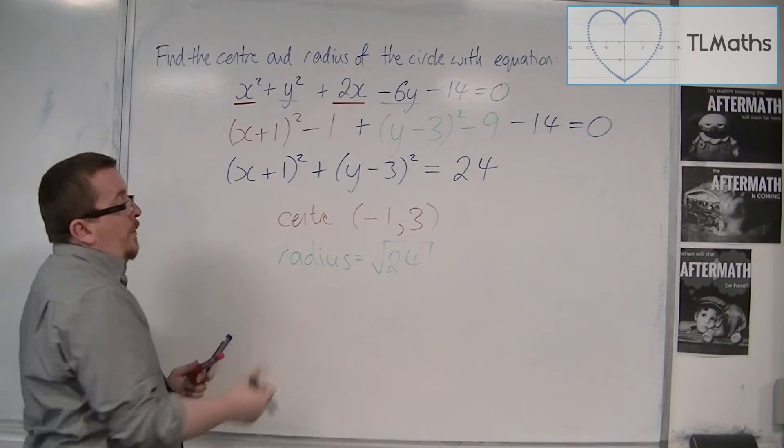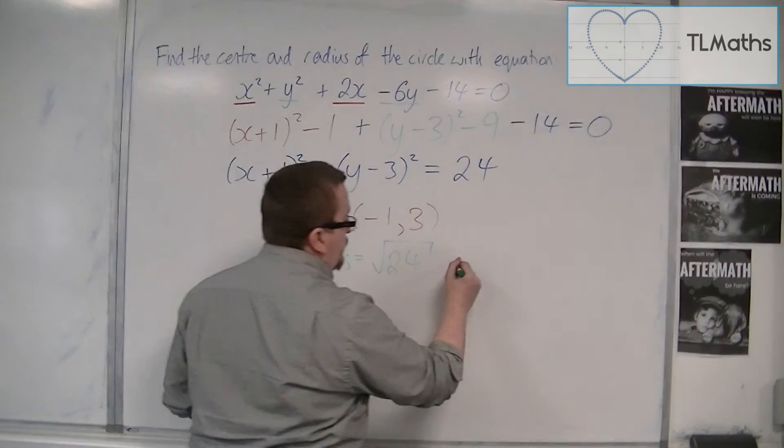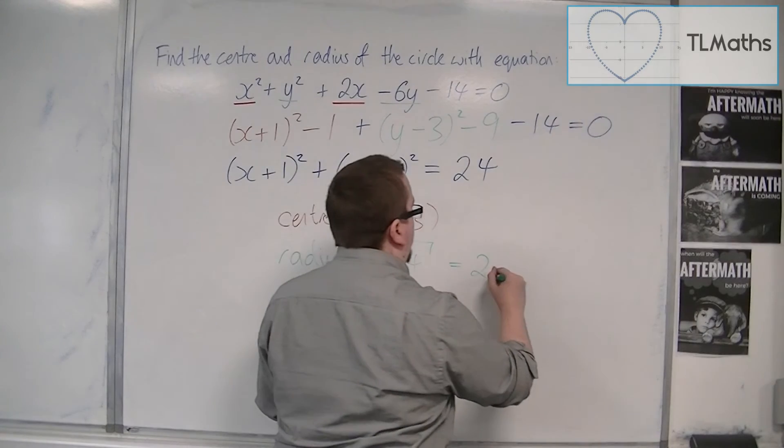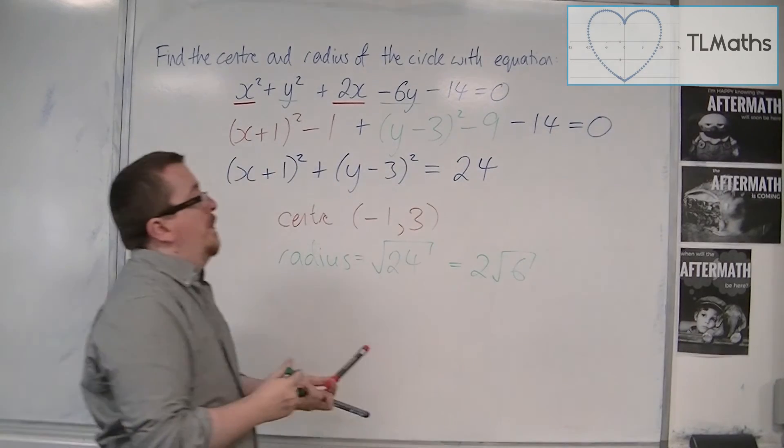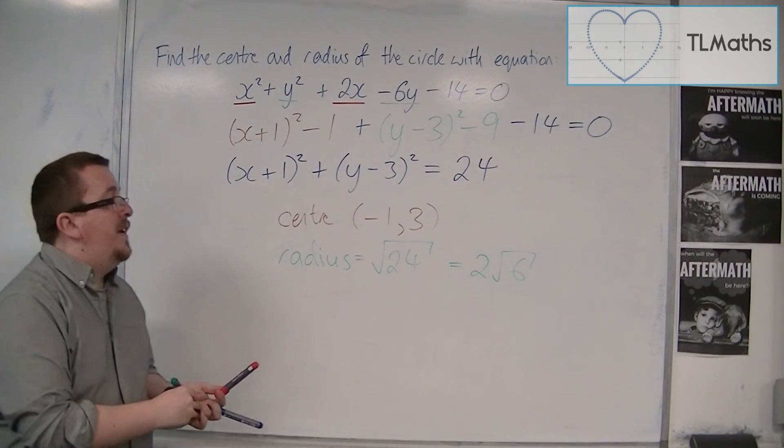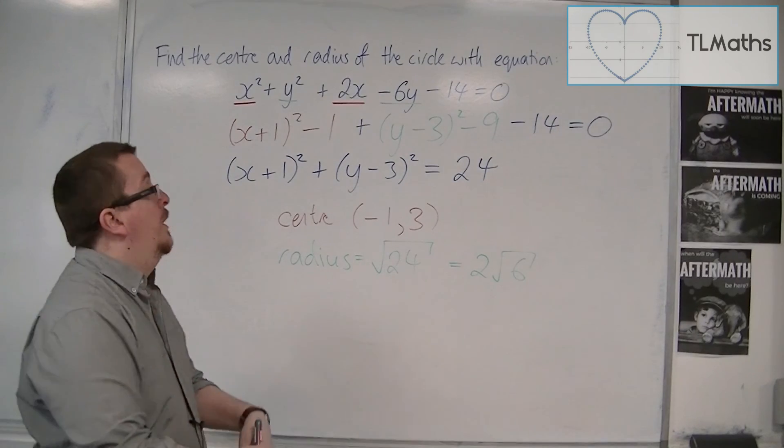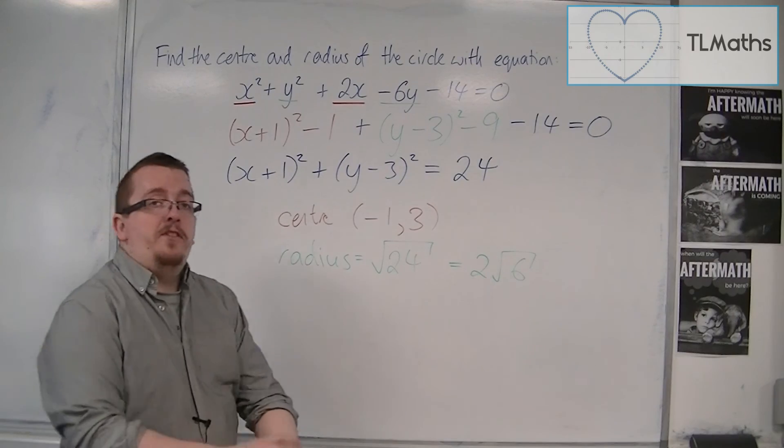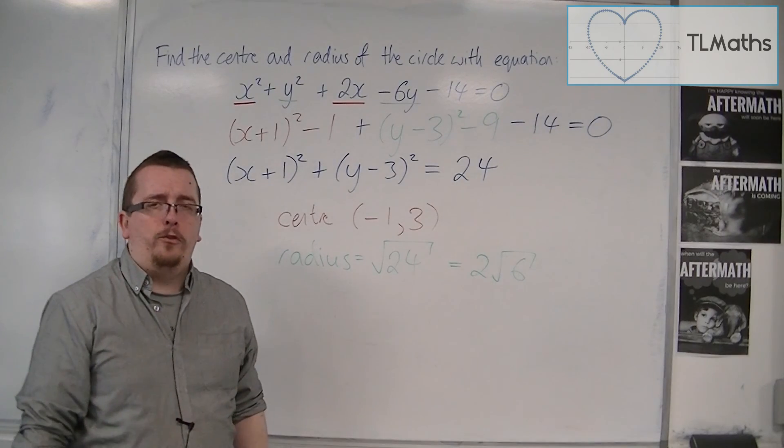Obviously, you can simplify the root down if you like, so 2 root 6. But that is how we can find the center and radius of a circle in this expanded form, using that completing the square technique that we saw before.